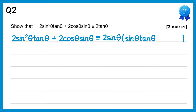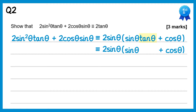We also want to multiply 2sinθ by something to get 2cosθ·sinθ — the only thing missing there is the cosθ. Next we're going to look at the tanθ and use the identity to replace it with sinθ over cosθ. So we've got 2sinθ, and inside the brackets we'll keep sinθ and cosθ, replacing tanθ with sinθ over cosθ.